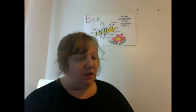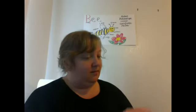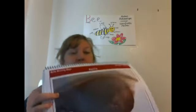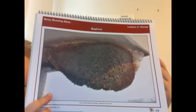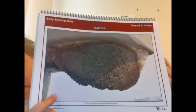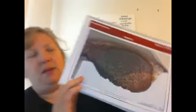Honeybees make honey in their nests. Have you ever seen a nest of a bee? Their nests are called beehives. They look like this. There's the beehive. Inside the beehive is what's called honeycomb. The honeycomb is a hexagon shape — six sides. Can you say that together? Hexagon.